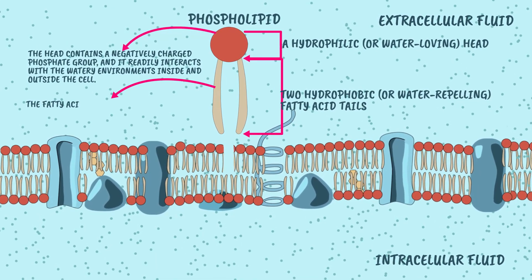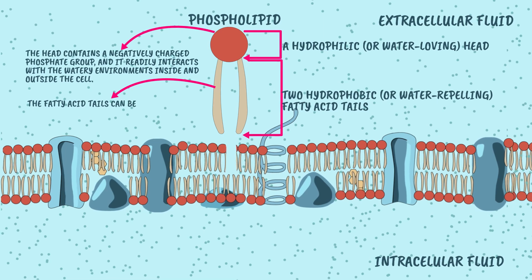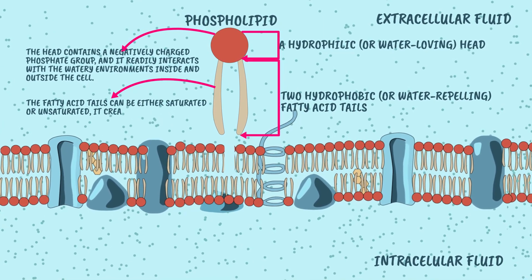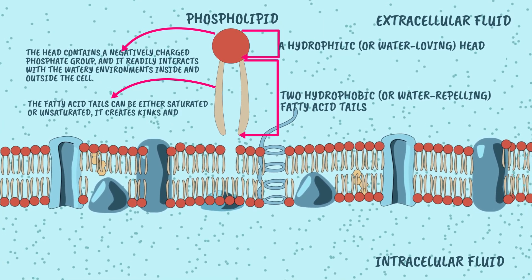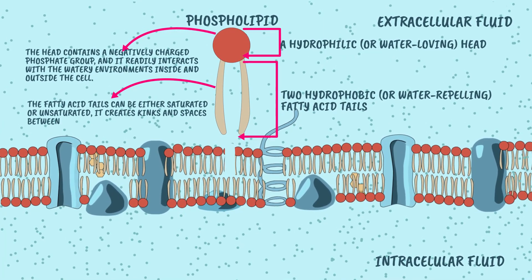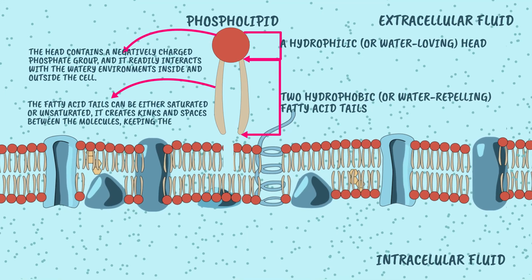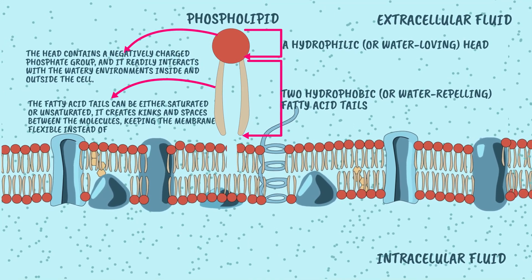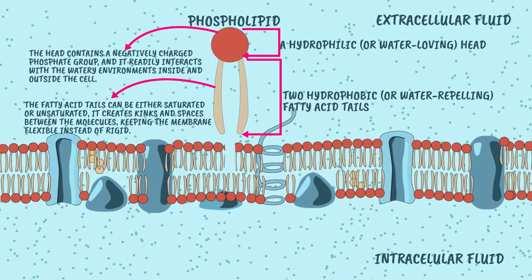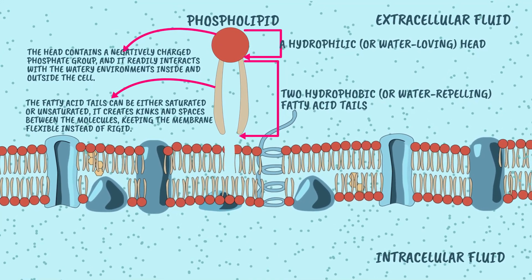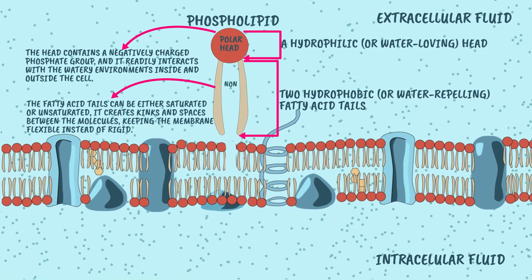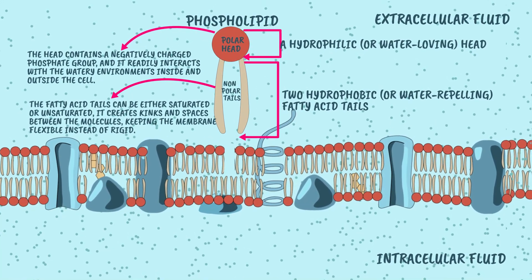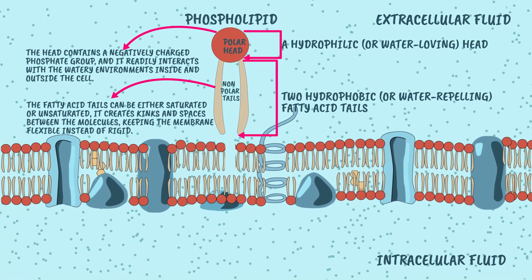The fatty acid tails can be either saturated or unsaturated, and this mix is key. It creates kinks and spaces between the molecules, keeping the membrane flexible instead of rigid. Because of this dual nature — a polar head and nonpolar tails — phospholipids are called amphipathic molecules.